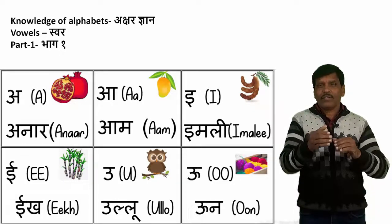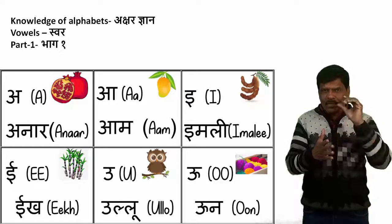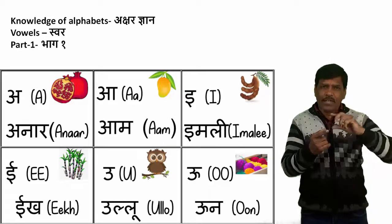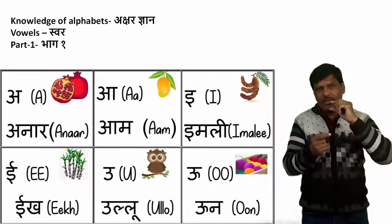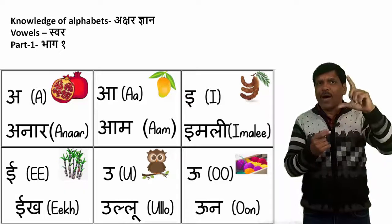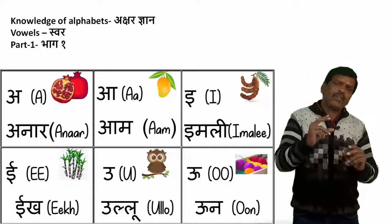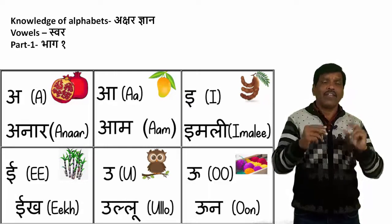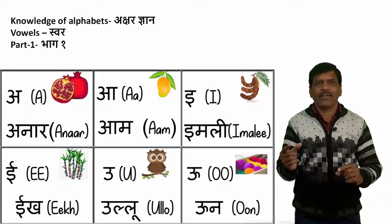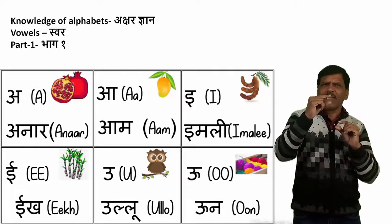The next alphabet is AA. See how I utter it — when I say A, my mouth opens a little bit. When I go for AA, the mouth opens a little bigger. AA is for aam — mango. You know mango, the fruit. When I say A, my mouth opens a little bit, but when we say AA, the mouth opens a bit wider.